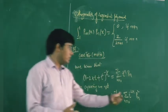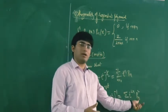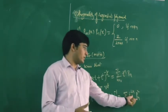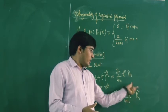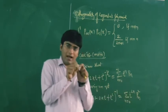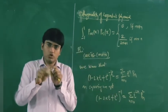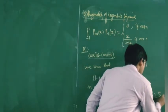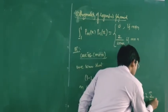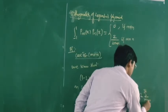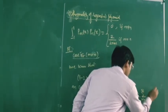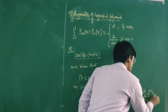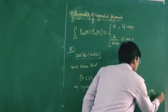The squared terms give t^(2n)·P_n², which are the diagonal terms. The cross terms 2AB give 2·t^(m+n)·P_m·P_n for m not equal to n, plus the diagonal sum over n of t^(2n)·P_n².